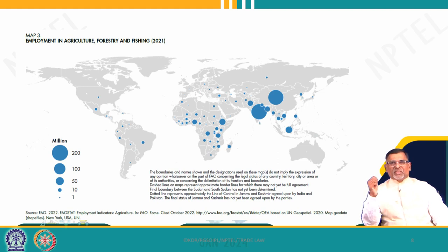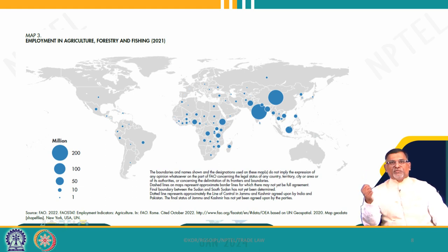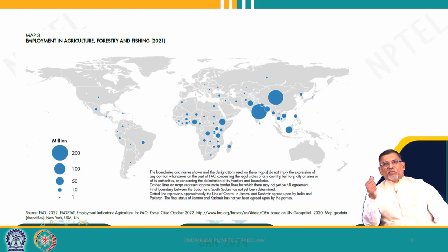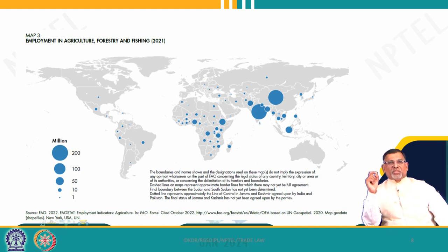India is one of the largest populations in the world and one of the largest producers of agriculture goods. India requires a huge quantity of agricultural food items, and the agriculture sector is the largest employment provider. This is the scenario all over the world. In countries like the Americas, agriculture has a very small contribution to employment, but in Asia it contributes substantially.